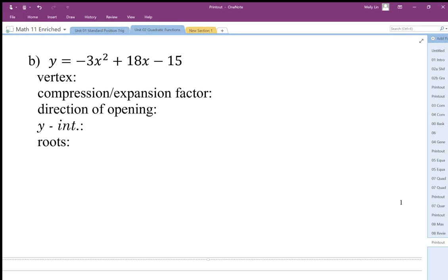When we look at this one, it's given in the general form or standard form. The standard form gives us lots of information - it gives us the expansion factor and direction of opening. So it's got a vertical expansion of three times, it opens down, and the y-intercept is going to be the last number in that term.